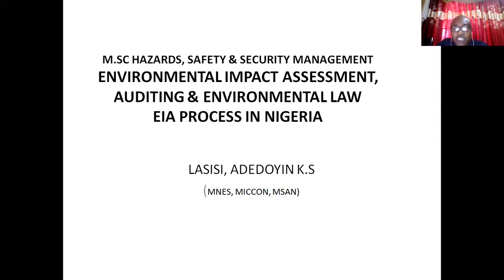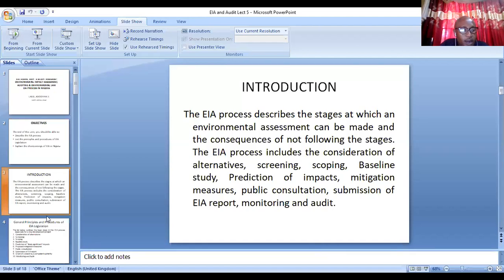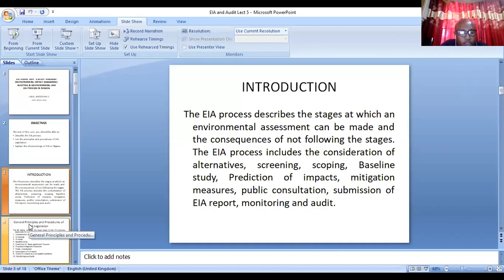The EIA process describes the various stages of EIA. These include the consideration of alternatives, the screening of the project, the scoping, the baseline study, the prediction of impacts, mitigation measures, public consultation, and submission of the draft EIA reports. Let's look at the various steps we need to go through before we can achieve our EIA.